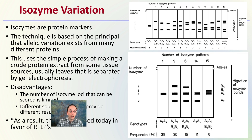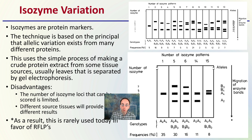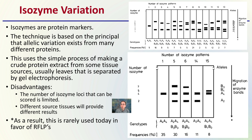Starting with the first one: isozyme variation. Isozymes are basically protein markers. This technique is based on the principle that allelic variations exist for many different types of proteins. It uses a simple process of making a crude protein extract from some tissue sources, usually leaves, that are separated by gel electrophoresis. The disadvantage, though, is that the number of isozyme loci that can be scored is limited — it's a limiting form of technology.